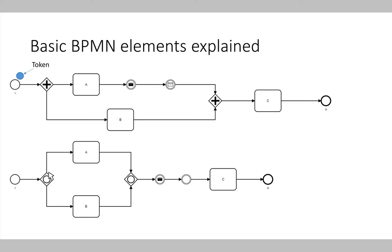A process describes an abstract representation of a process. Using tokens — a mark with a color or a number — we represent different process instances. In the upper part of the slide, we see a token representing one instance of the process. Using this token, we can see how the process is executed: it starts at the start event, and once it arrives at the split gateway, the token is split into two tokens — one moving along the upper process path, the other along the lower.